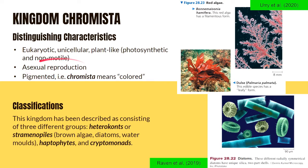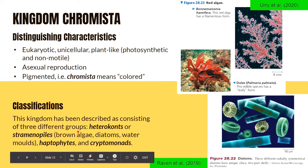They reproduce through asexual reproduction. Their name suggests that they are also pigmented organisms, because chromista means color. This kingdom has been described as consisting of different groups: heterokonts or straminopiles — your brown algae, diatoms, or water molds — haptophytes, and cryptomonads.